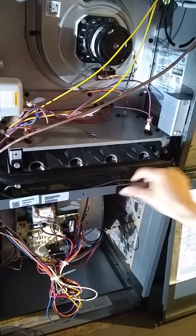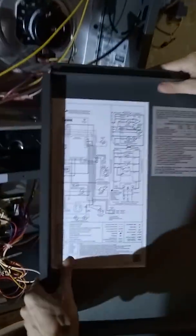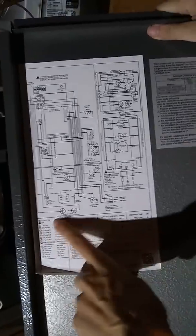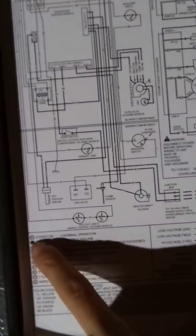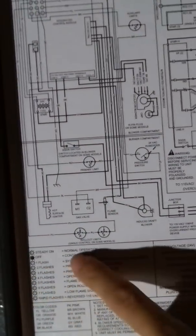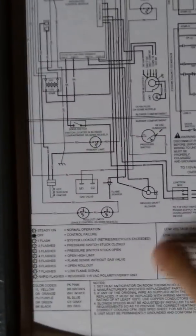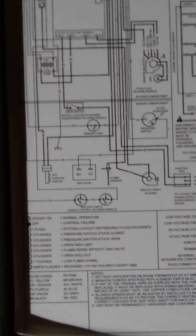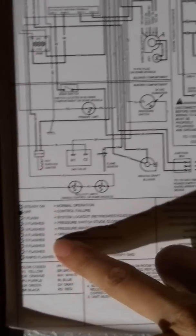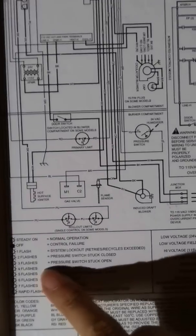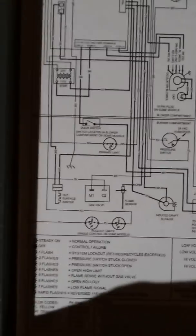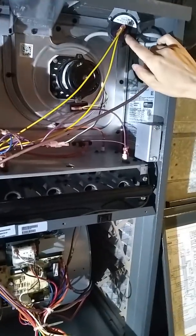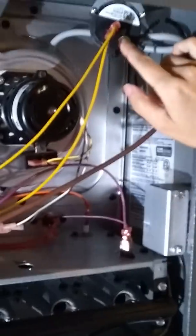Now let's go back to this panel and look at here. There are some manual information about this light. If it's steady on, it means normal. If it's off, there's some big problem. If it's flashing, the computer is working but can detect some signal that's not working, and gives this signal. Three flashes means pressure switch stuck open. So let's look at the pressure switch.